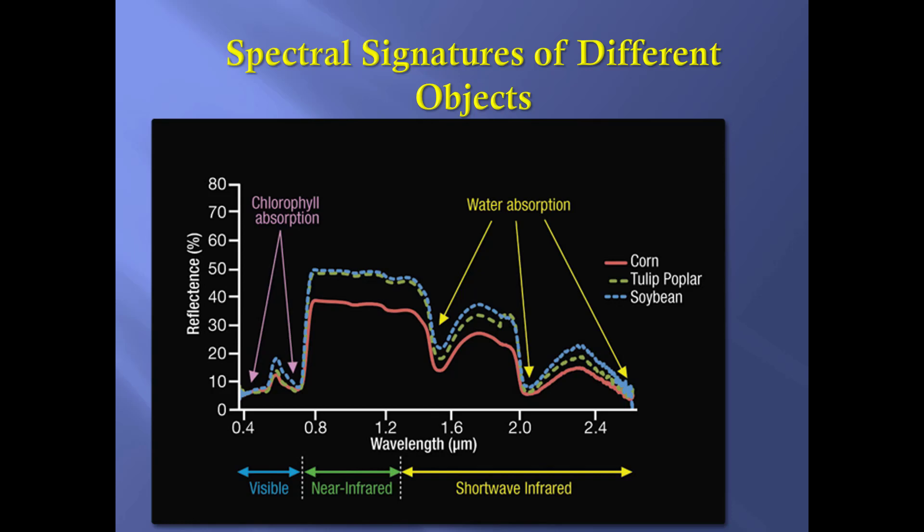Revisiting this graph, pay particular attention to the low areas — those are the absorptive areas. With chlorophyll, absorption occurs in the red and blue portions of the visible spectrum. Water absorption occurs because of the water content in the actual leaves or vegetation.